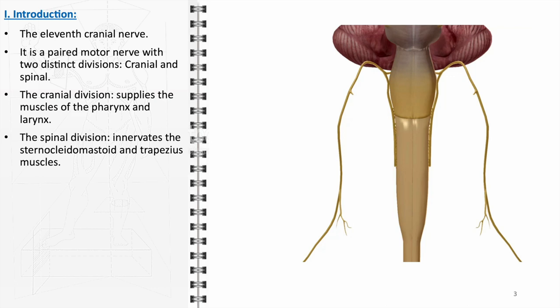Damage or dysfunction in this nerve can lead to significant impairments. In addition to its primary motor functions, the accessory nerve also has a role in proprioception, providing feedback about the position of the neck and shoulder muscles.